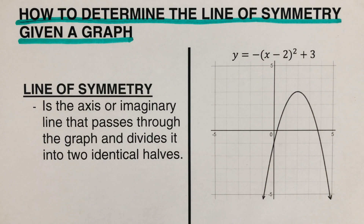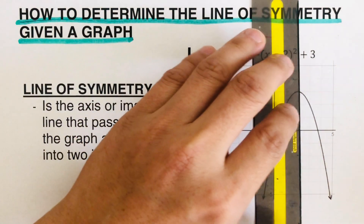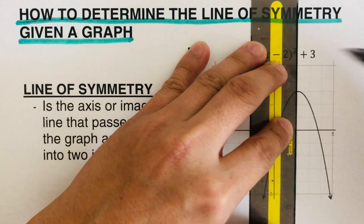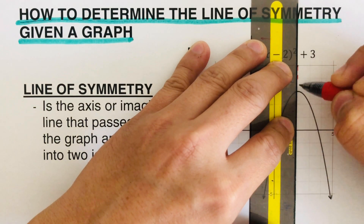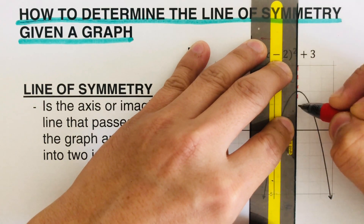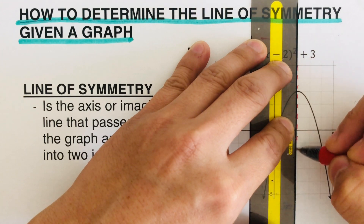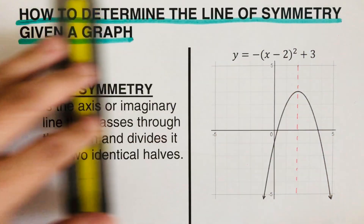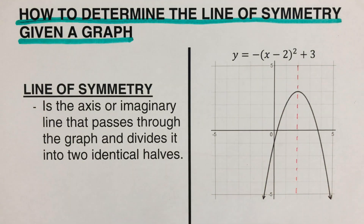In this example, we are going to determine where that line is, such that if we draw it, it will divide this graph into two equal parts. Looking at this picture, the line of symmetry should sit here. I'm going to draw a broken line to represent the line of symmetry.